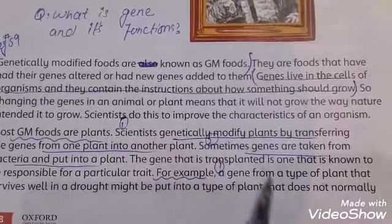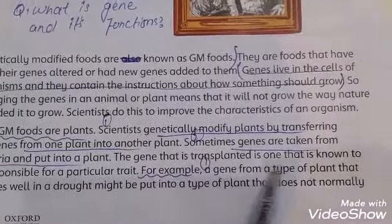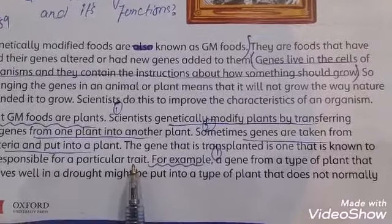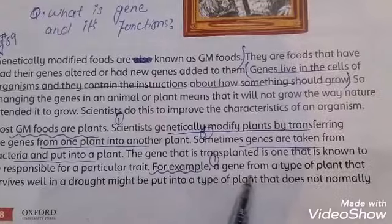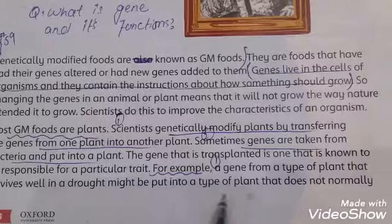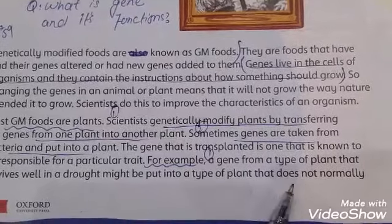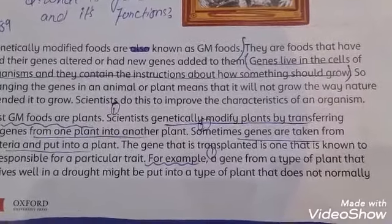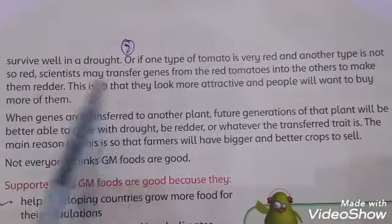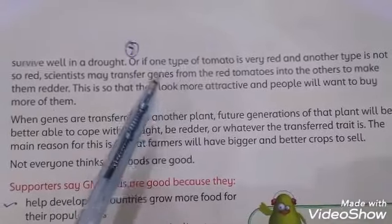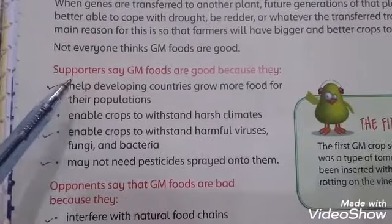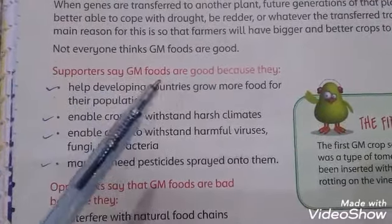In these transplants, genes are responsible for a particular trait. For example, a scientist can put a gene of a plant that survives in drought into another plant that does not survive in drought. Another example: if one tomato's color is red and another is not, a scientist may transfer the gene of the red tomato to the other plant.